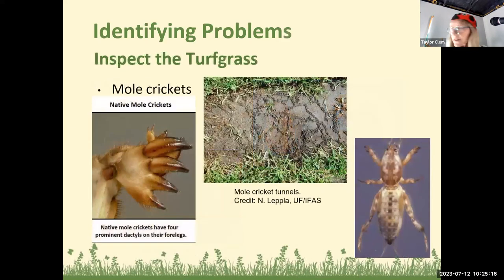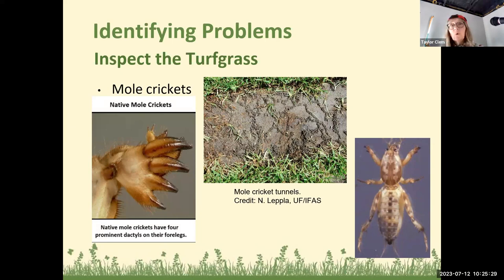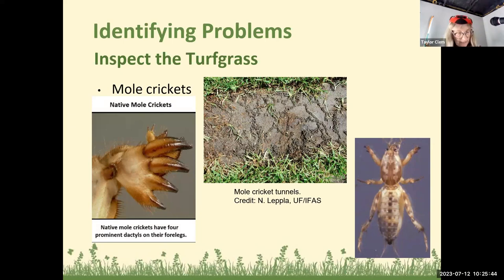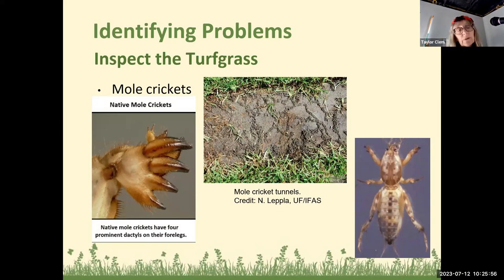Mole crickets are fascinating — I'd never seen them before moving to Florida. They have specialized front paws called dactyl forearms, and they dig around underground just like a regular mole, leaving little trails. They eat roots and grass. A healthy turf helps. Natural predators include beneficial nematodes, spiders, tiger beetles, larra wasps, birds, and ground diggers.